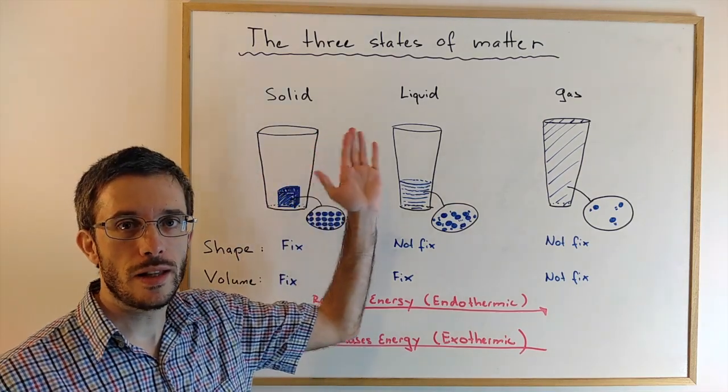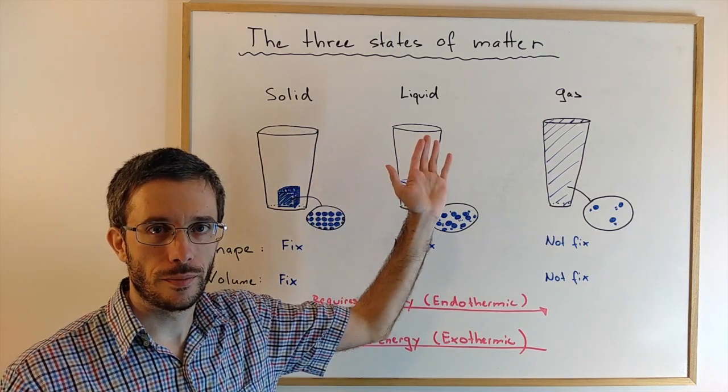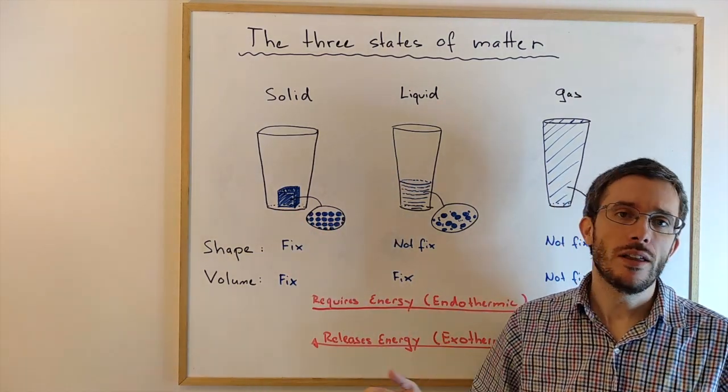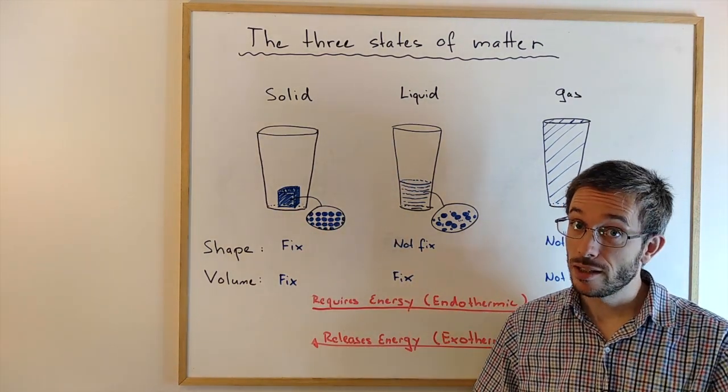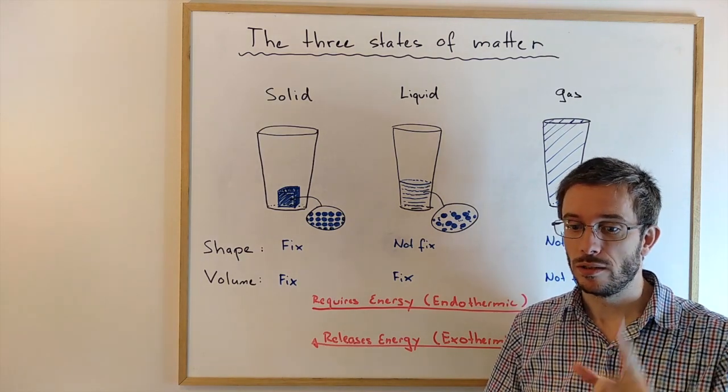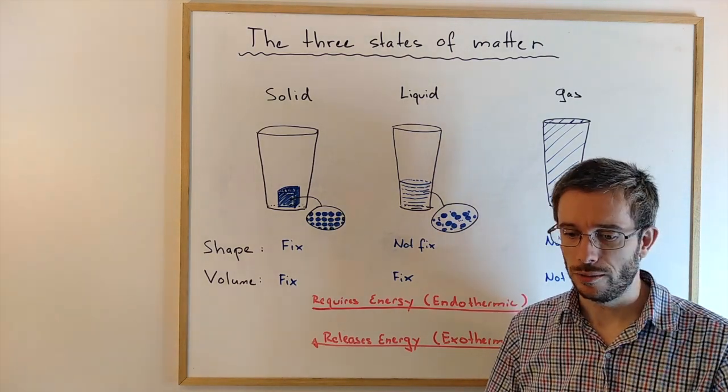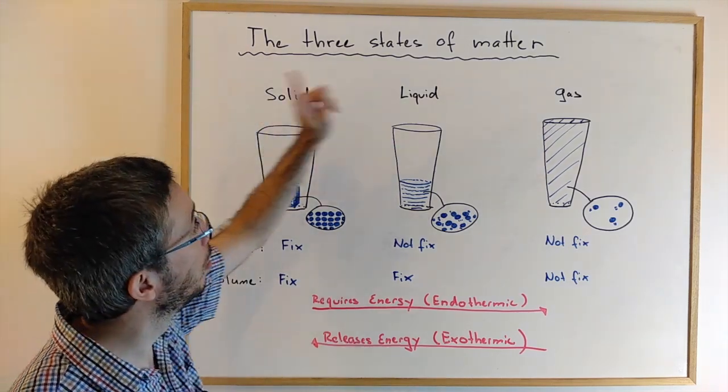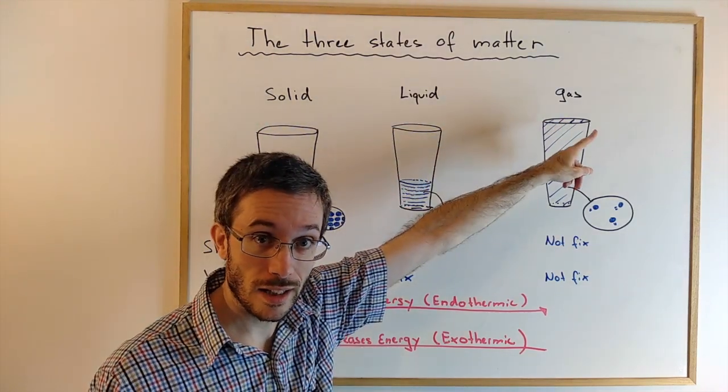There are three main states of matter. First of all, what is matter? Matter is anything that has mass and occupies space. So, two requirements for being matter. The three main states are solid, liquid, and gas.